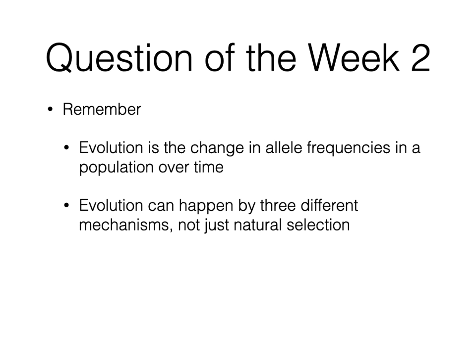Evolution can happen by three different mechanisms, not just natural selection. As I mentioned in last week's lecture, we tend to think that natural selection and evolution are the same things, but they're not. Natural selection is one way in which evolution happens — one way in which changes in allele frequencies occur — but it is not the exact same thing. Not all evolution happens by natural selection.